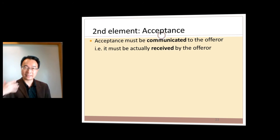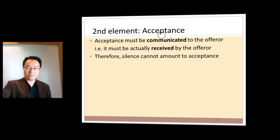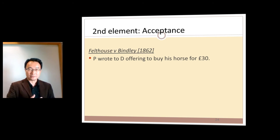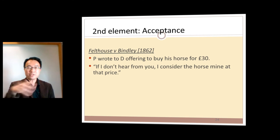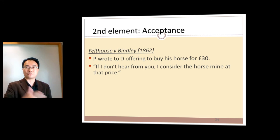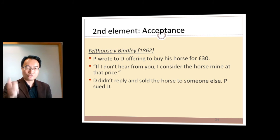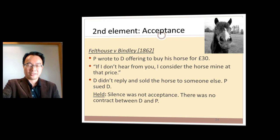You must communicate your acceptance — after an offer has been made, you must tell the offeror, 'I accept your offer.' There is no such thing as silence being consent in contract law. In Felthouse v Bindley, an uncle wrote to his nephew offering to buy a horse for £30, saying, 'If I don't hear from you, I consider the horse mine.' The nephew didn't reply and sold the horse to someone else. The court said silence cannot be acceptance and there was no contract, since there was no way the nephew intended to accept by not saying anything.